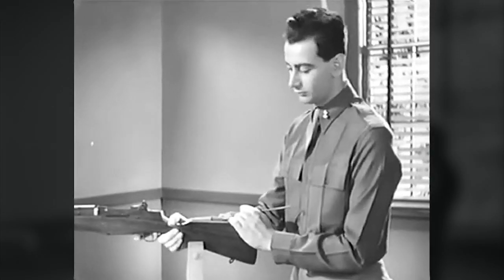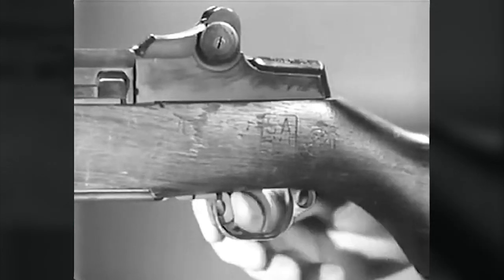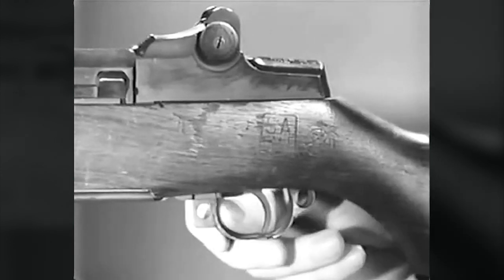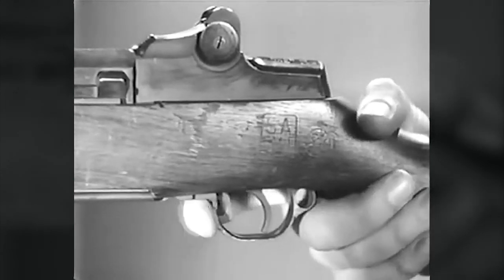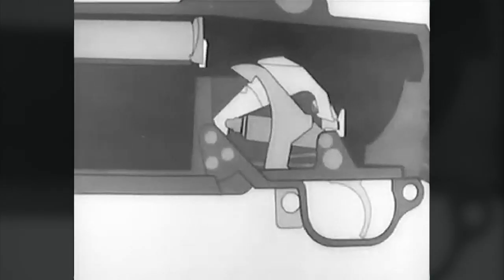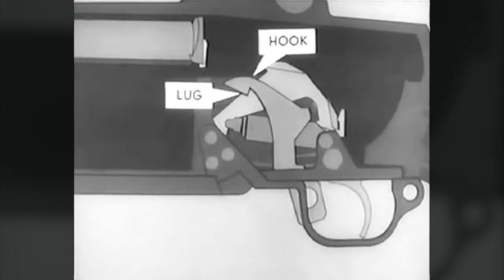Now for the safety. To set the rifle at safe when it is cocked, pull back the safety so that it is inside the trigger guard. Here's what happens. The safety rotates about the safety stud. And this hook engages the lug on the hammer. The trigger can't be pulled because the trigger lug is blocked by this hump on the safety.